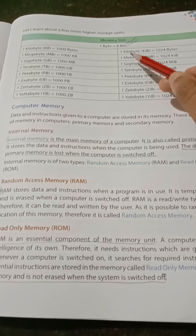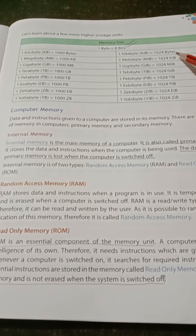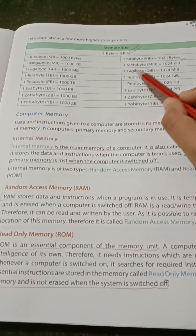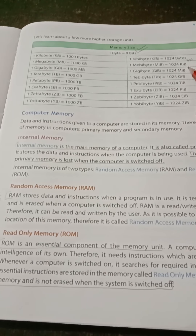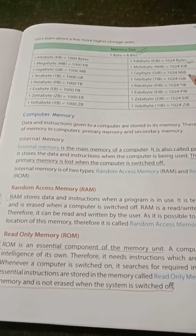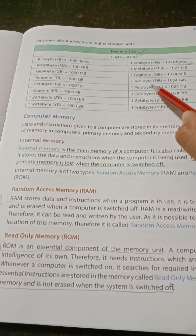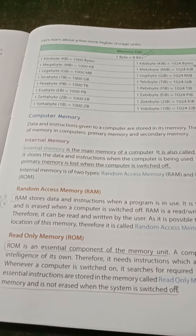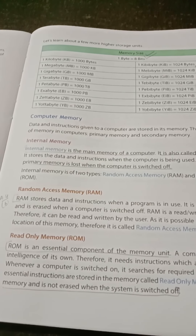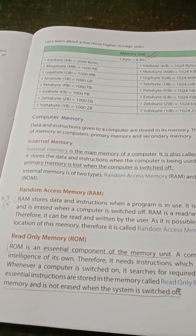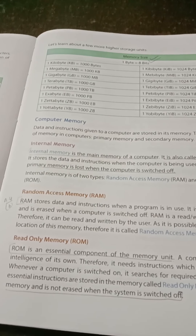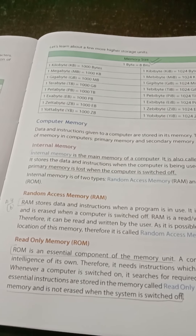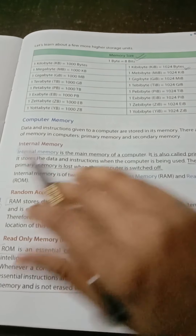One kibibyte is equal to 1024 bytes — this is the main one. One mebibyte is equal to 1024 kibibytes, one gibibyte is equal to 1024 mebibytes, one tebibyte is equal to 1024 gibibytes, one pebibyte is equal to 1024 tebibytes, one exbibyte is equal to 1024 pebibytes, one zebibyte is equal to 1024 exbibytes, and one yobibyte is equal to 1024 zebibytes. This is the chart you have to read through — don't memorize it.